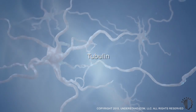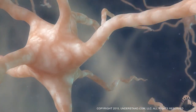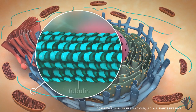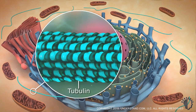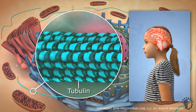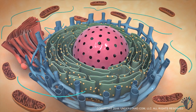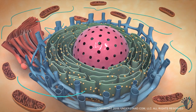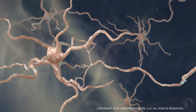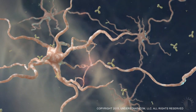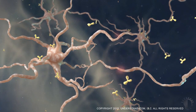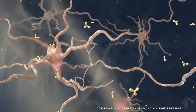Tubulin is an intracellular scaffolding protein that is found in all cells but is highly concentrated within the cells of the brain. Tubulin helps cells to maintain their shape and plays an important role in cell division. Antitubulin antibodies can interfere with these normal cellular functions within brain cells, leading to neurologic dysfunction.